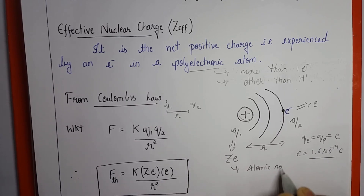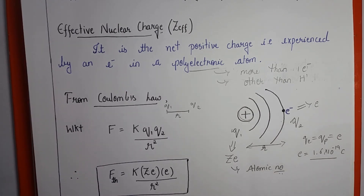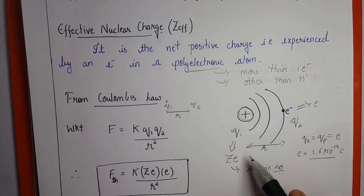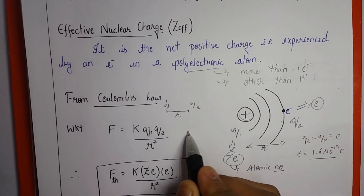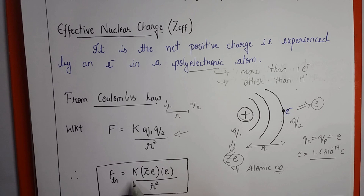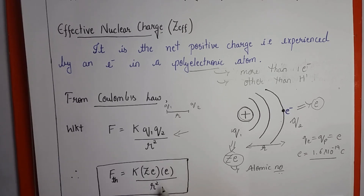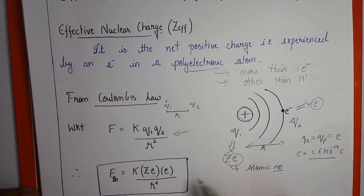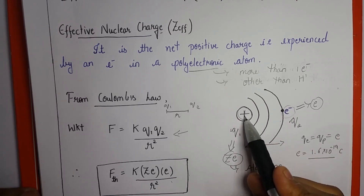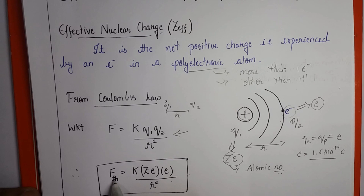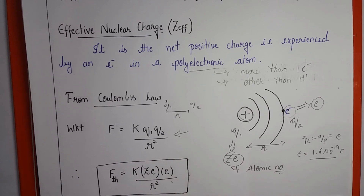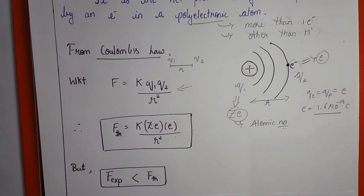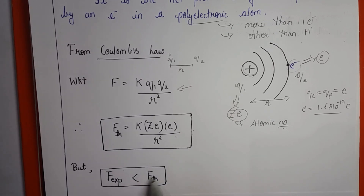The atomic number represents the total number of electrons or total number of protons present in an atom. Substituting these values into the equation, we get F equals k times Z times e divided by r squared. This is the theoretical force of attraction experienced by the electron due to the positive charge nucleus, denoted as F_theoretical.